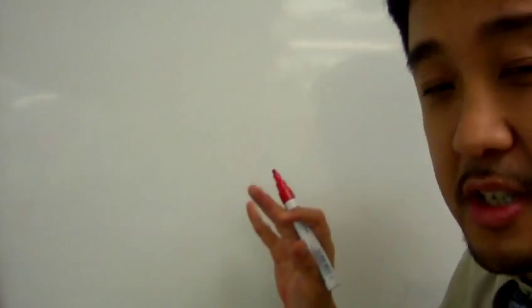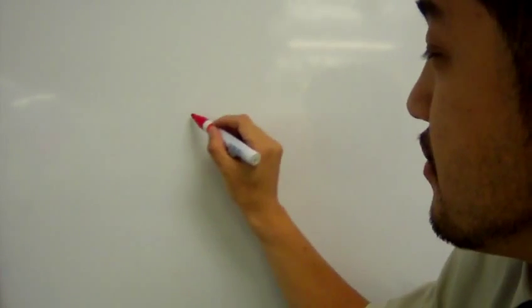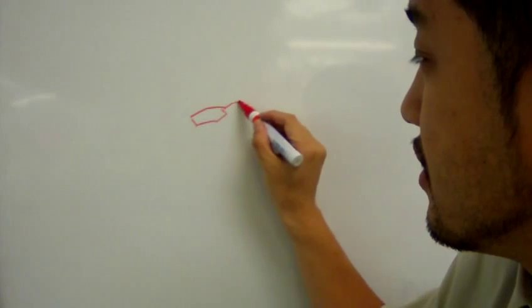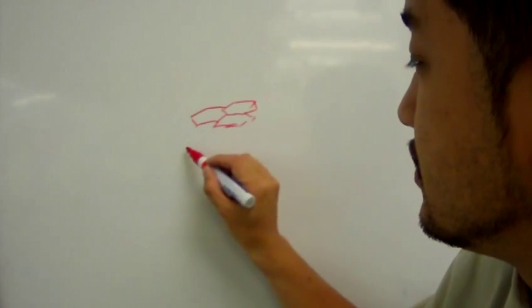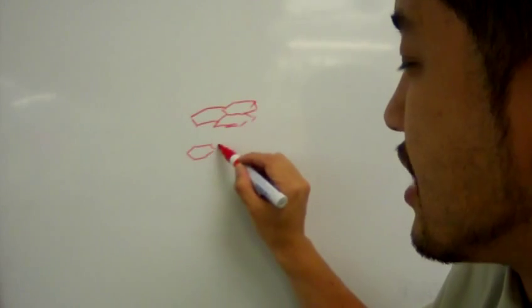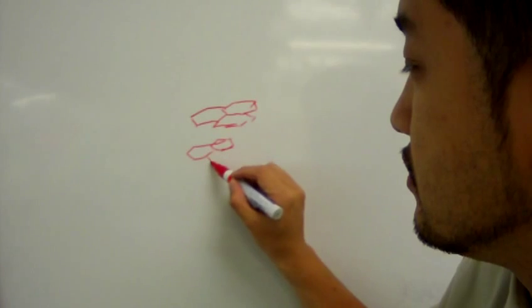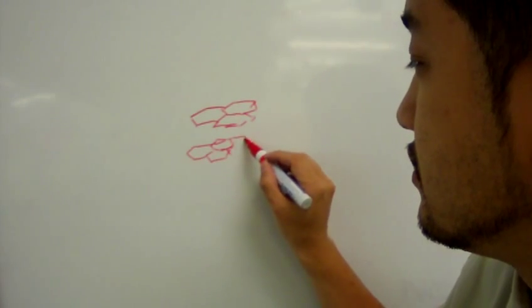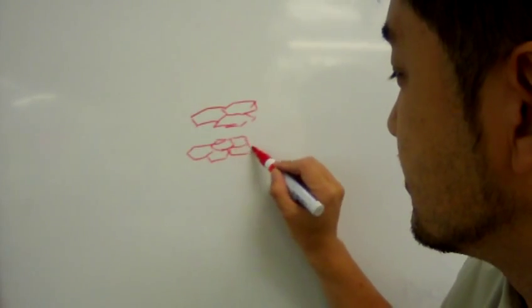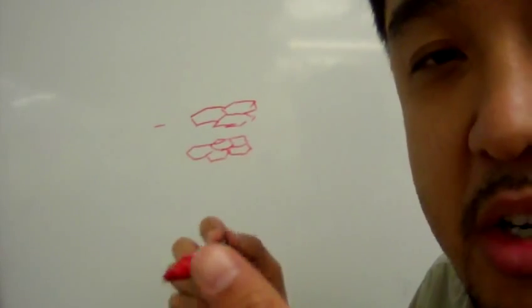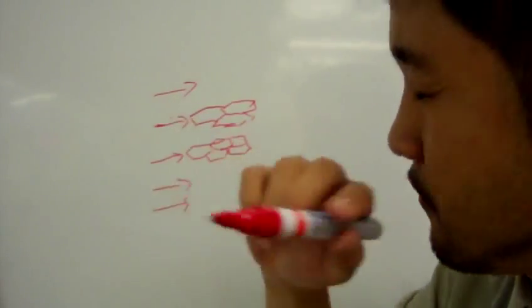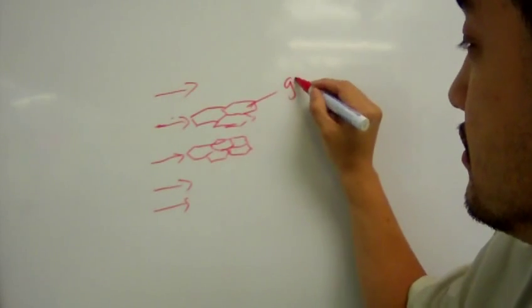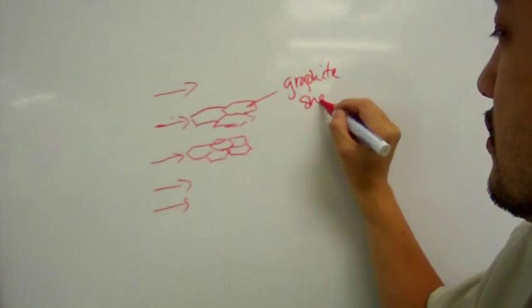Now, not only does graphite have that free electron in that configuration which I drew just now, graphite is actually made out of multiple layers and layers and layers of graphite sheets, like the graphite in your pencils.